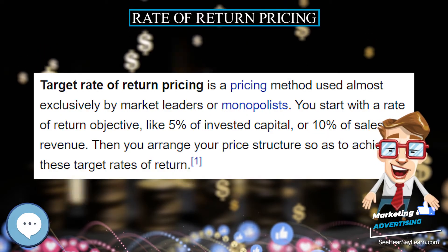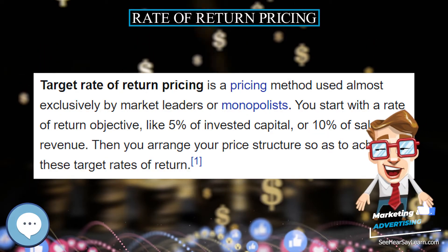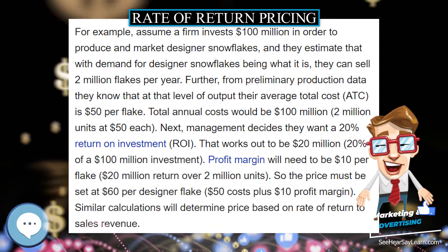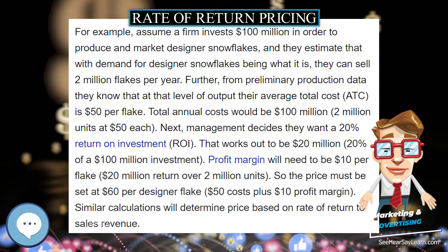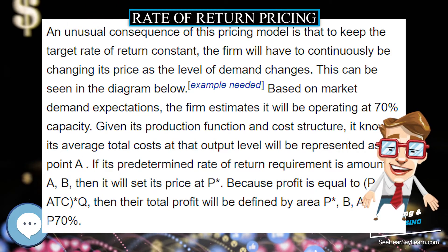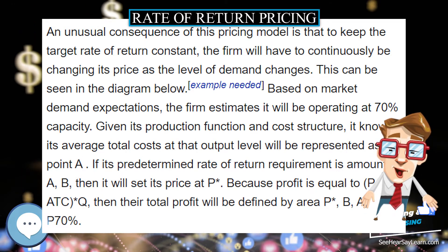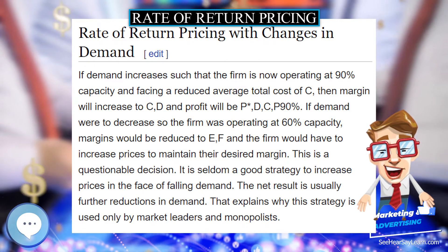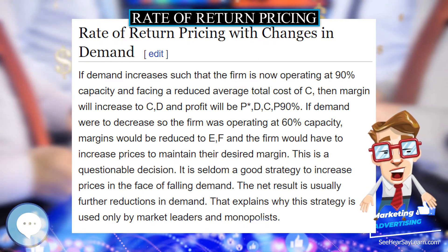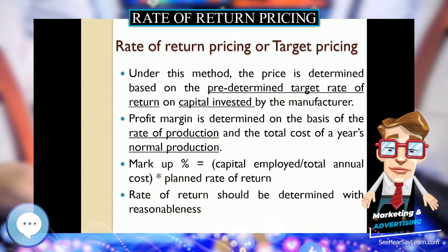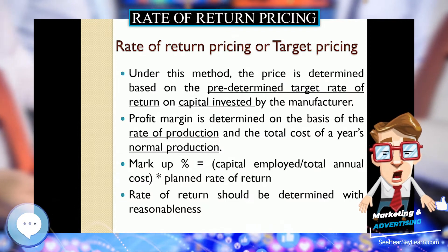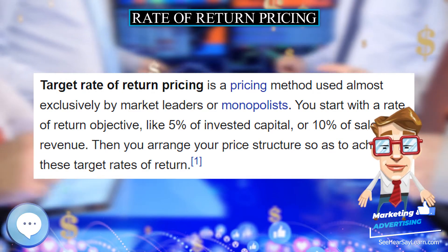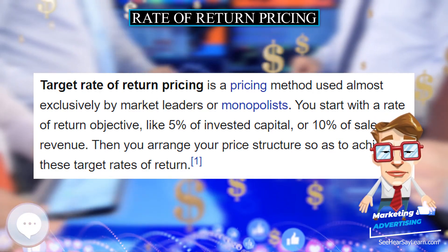For example, assume a firm invests 100 million dollars in order to produce and market designer snowflakes, and they estimate that with demand being what it is, they can sell 2 million flakes per year. From preliminary production data, they know that at that level of output their average total cost (ATC) is 50 dollars per flake, making total annual costs 100 million dollars — 2 million units at 50 dollars each.